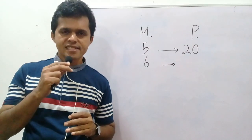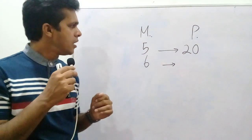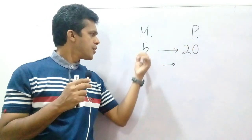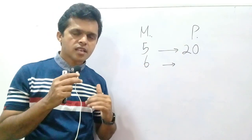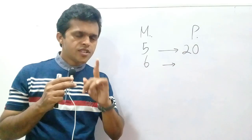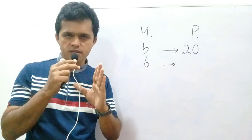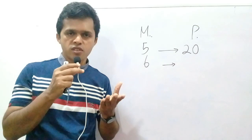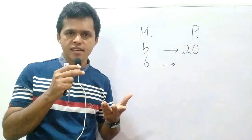In this segment let's learn the sums related to direct proportions. Here M means mangoes and P means price. 5 mangoes can be bought for 20 rupees and 6 mangoes can be bought for 24 rupees. Bear in mind this segment must be understood properly, as it is based on many questions given in the future especially in grade 10 and grade 11.